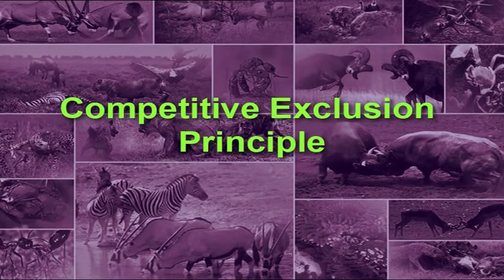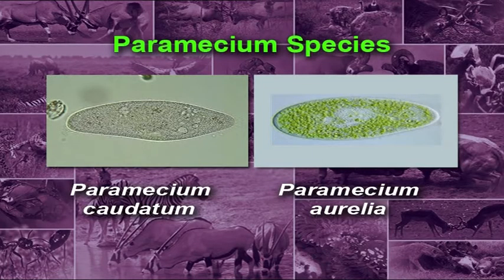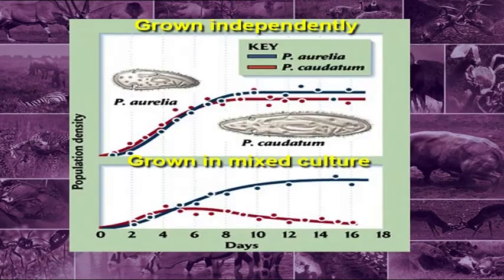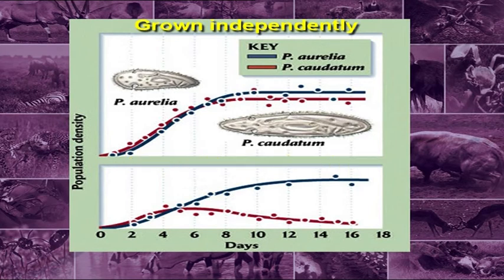During this lecture we will learn about competitive exclusion principle and niche concept in detail. In laboratory experiments, Gause made on Paramecium species — Paramecium caudatum and Paramecium aurelia — it has been found that both species approximate to logistic growth with a sigmoidal growth curve when cultured independently. But in mixed cultures, Paramecium aurelia survives and Paramecium caudatum dies out.